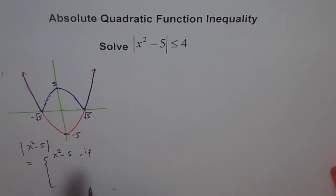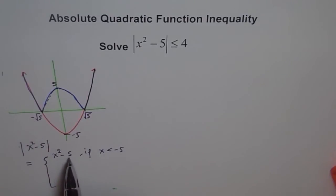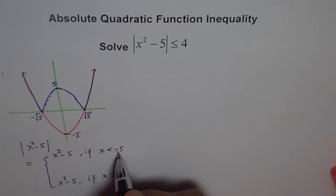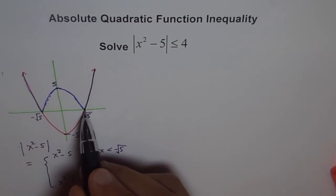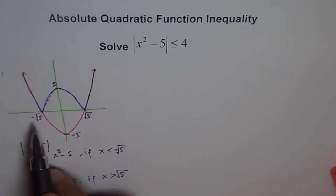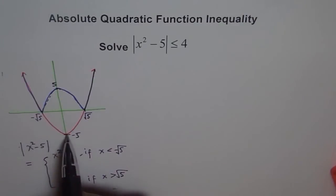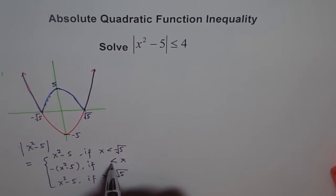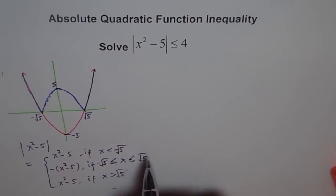If x is less than -√5 or greater than √5, the function remains as x² - 5. But if x is within -√5 and +√5, the function flips — it becomes -(x² - 5) for x greater than or equal to -√5 and less than or equal to √5.